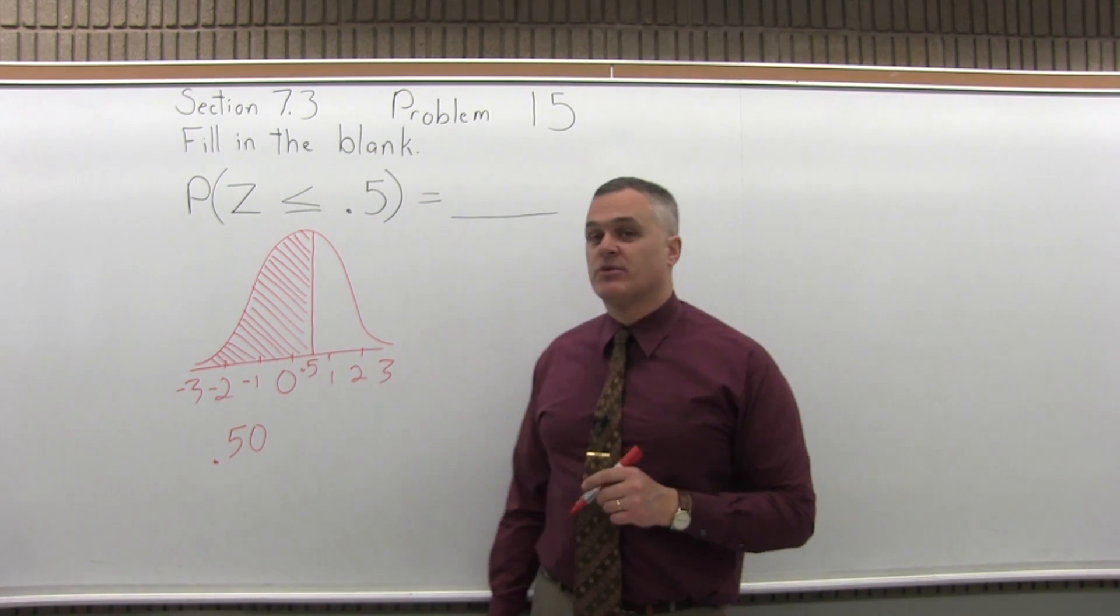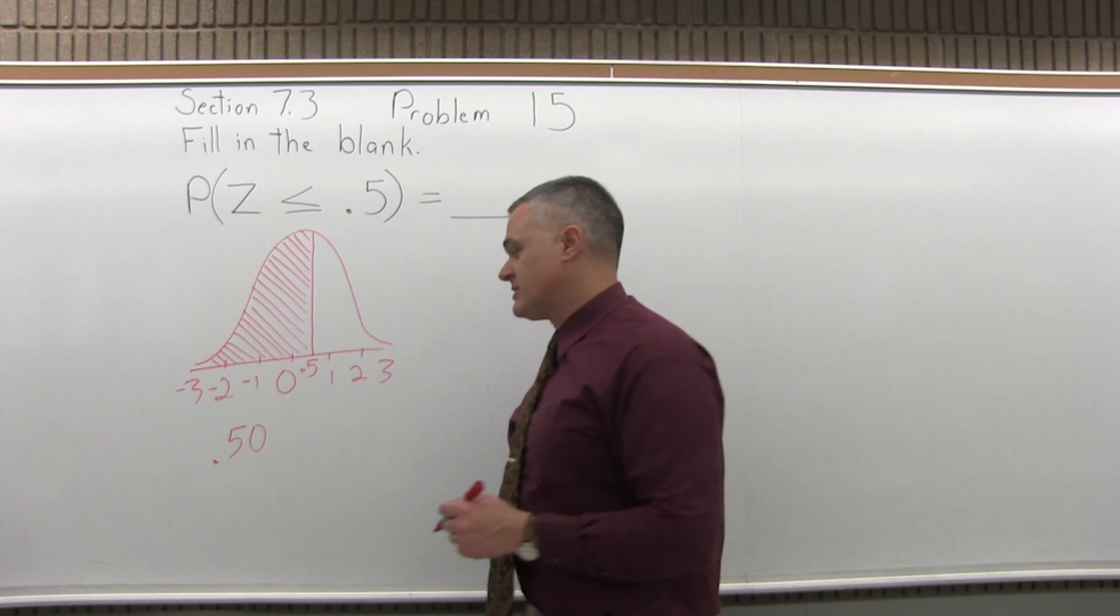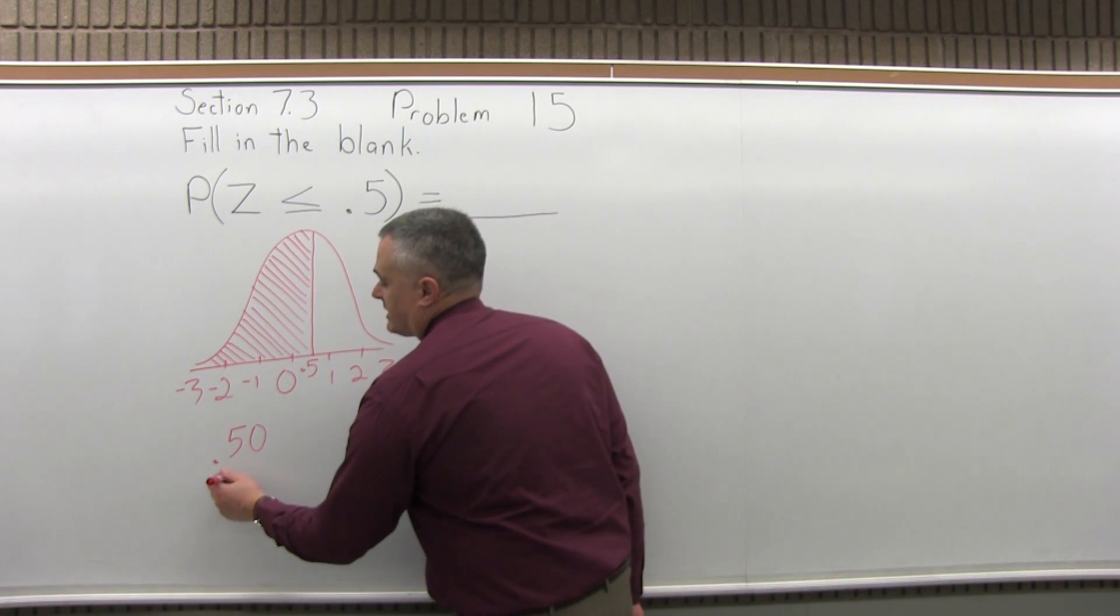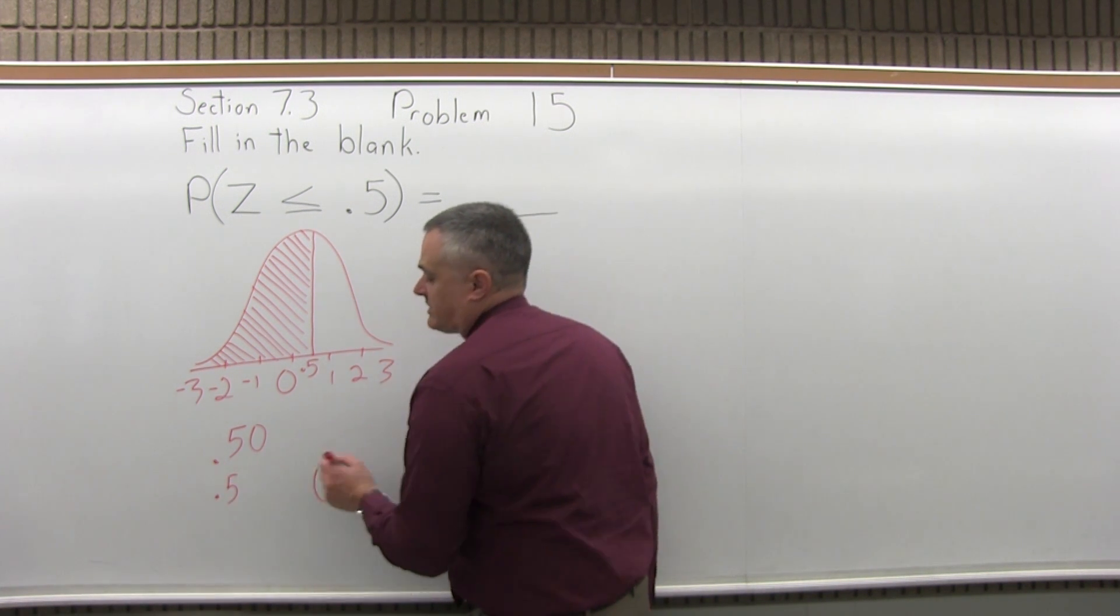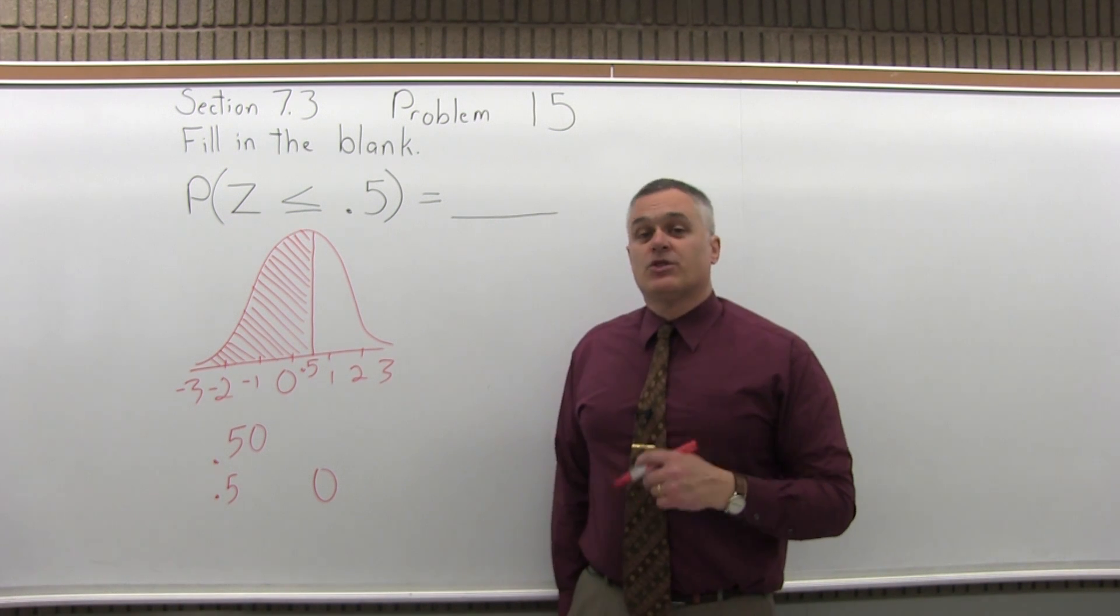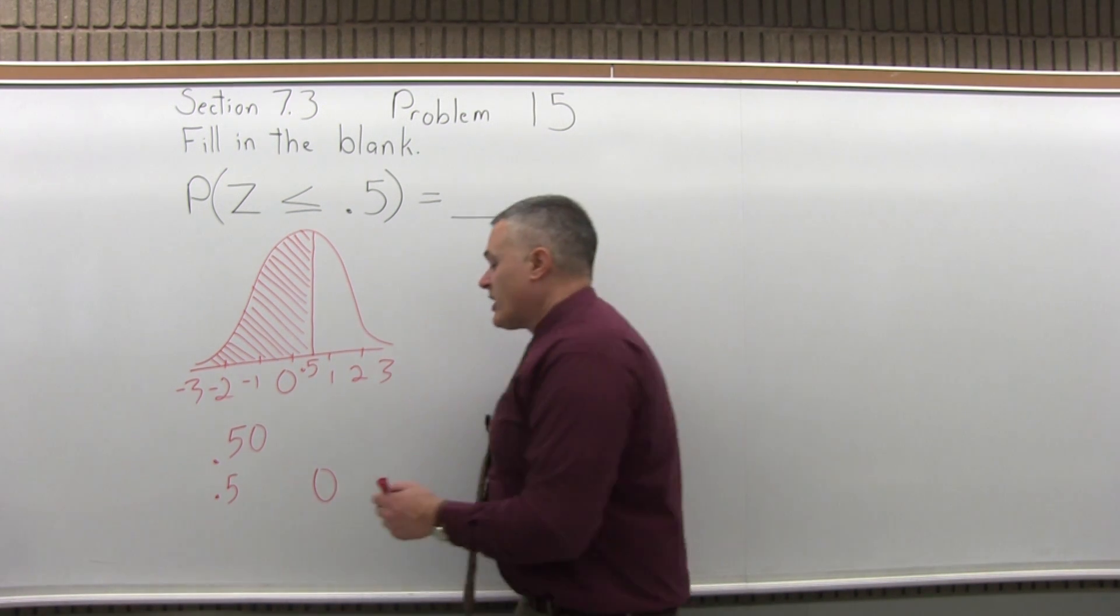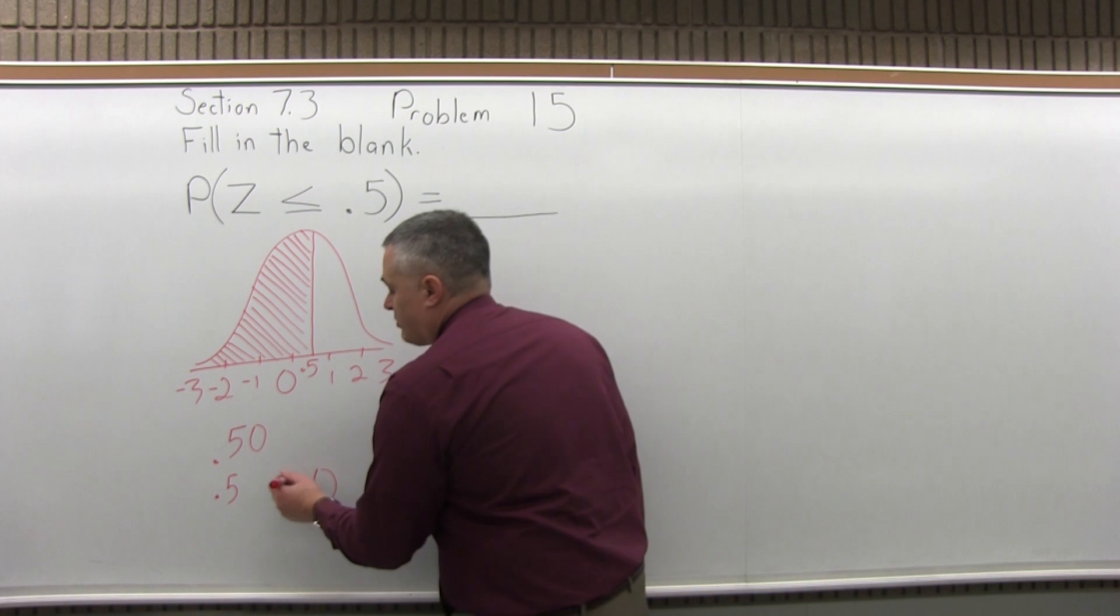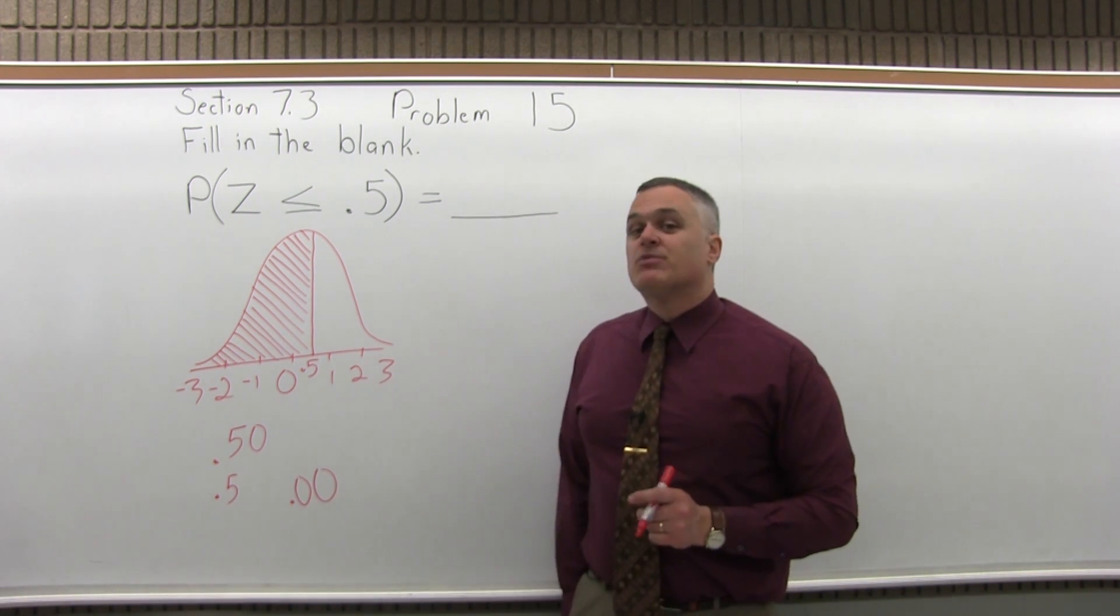The second step is split the number into two parts by pulling off the rightmost digit. So that 0 that I just added in, I'm actually going to pull it off to the side now. The third step is to write a .0 in front of the rightmost digit that you pulled off. So it's now written as .00.